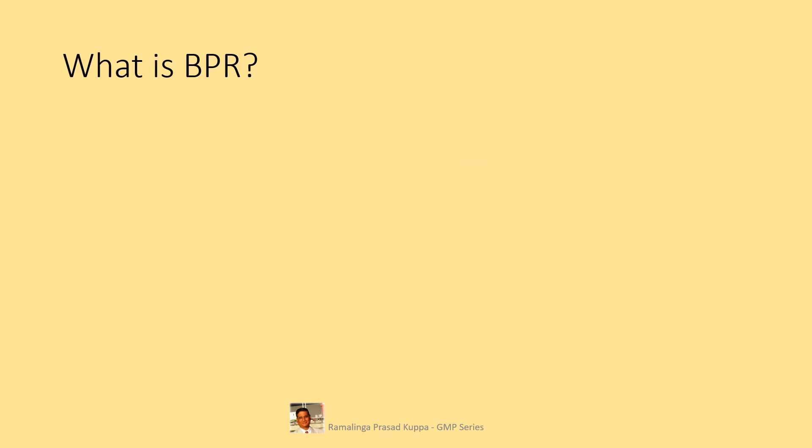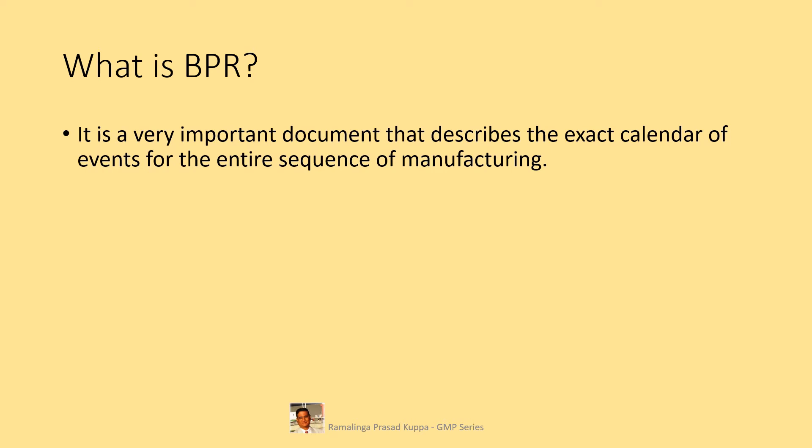What is the BPR? It is a very important document that describes the exact calendar of events for the entire sequence of manufacturing. This record is the entire history of a particular batch from start to finish — this is the horoscope of the batch, the health report of the batch. This document completely reflects the health status of the batch.